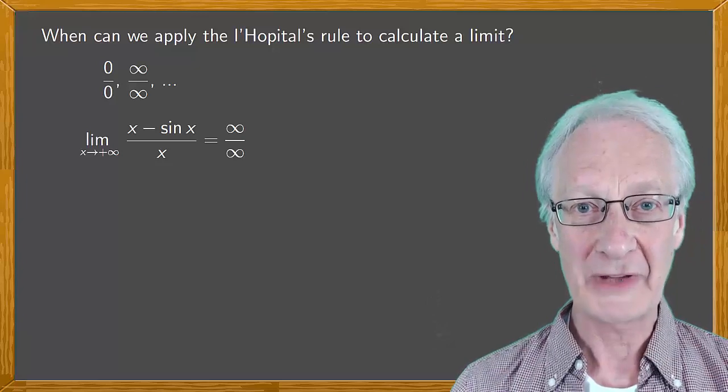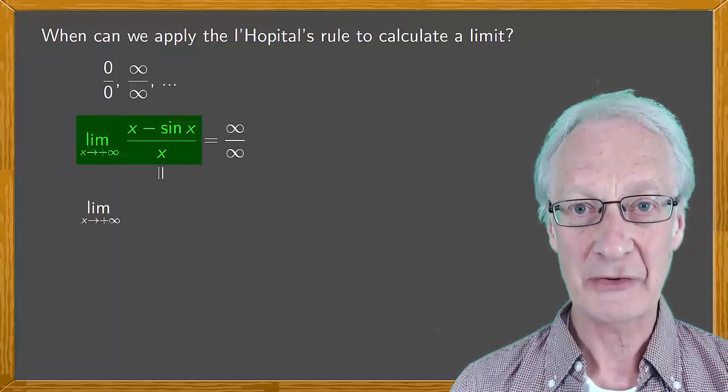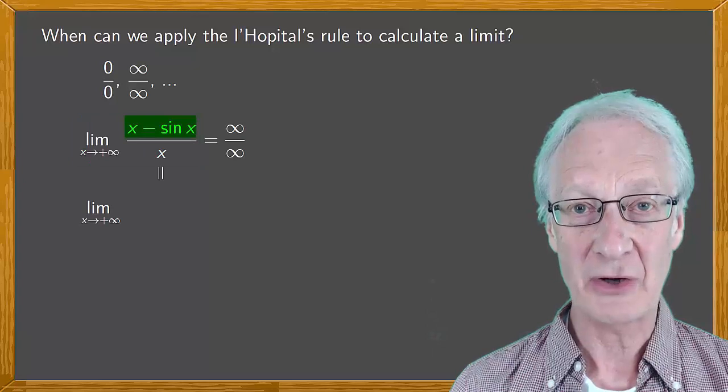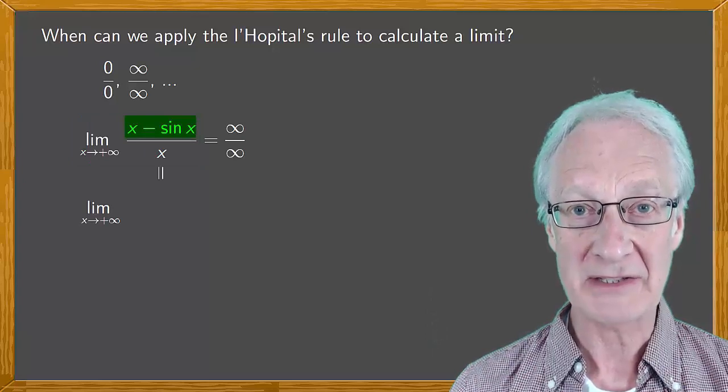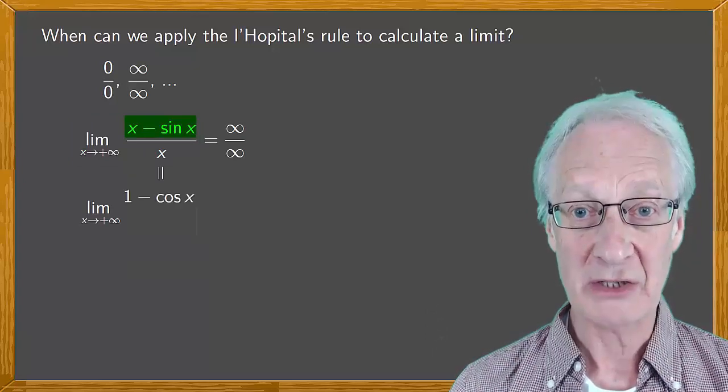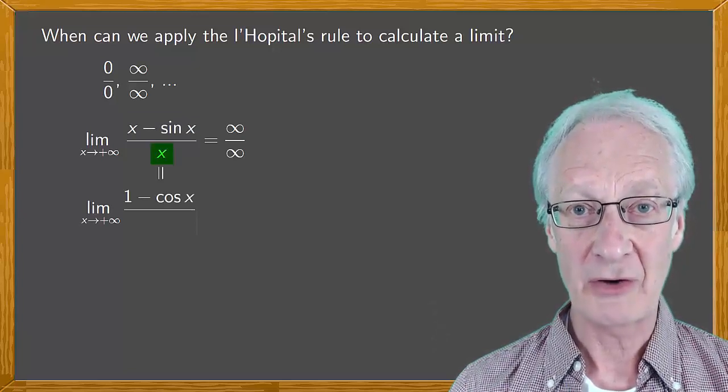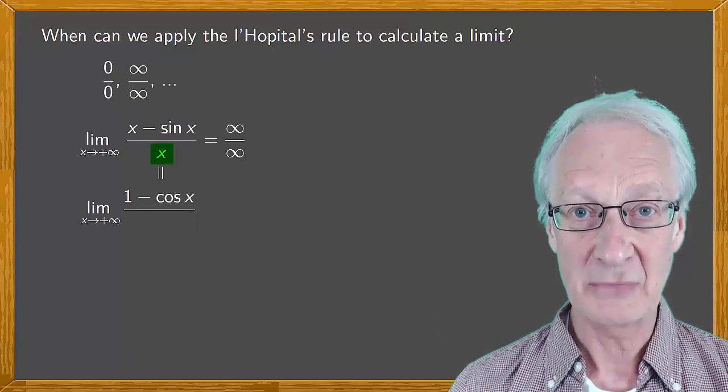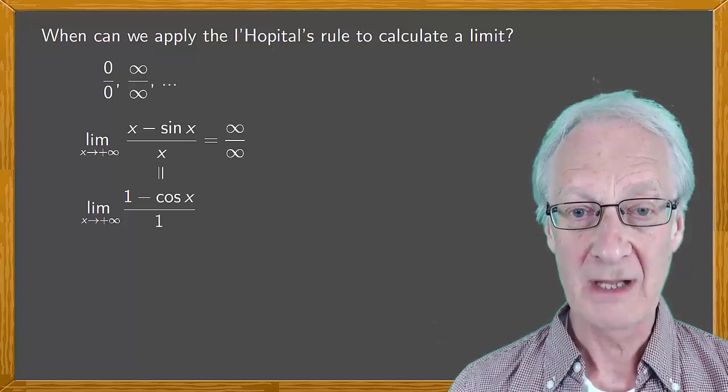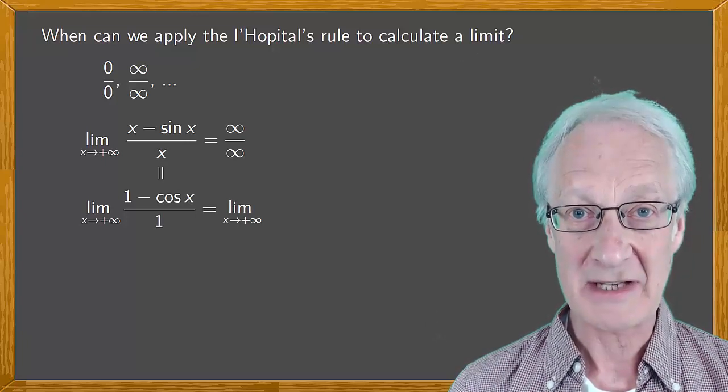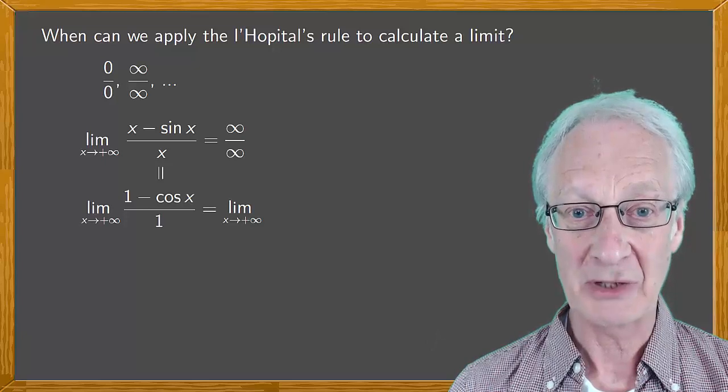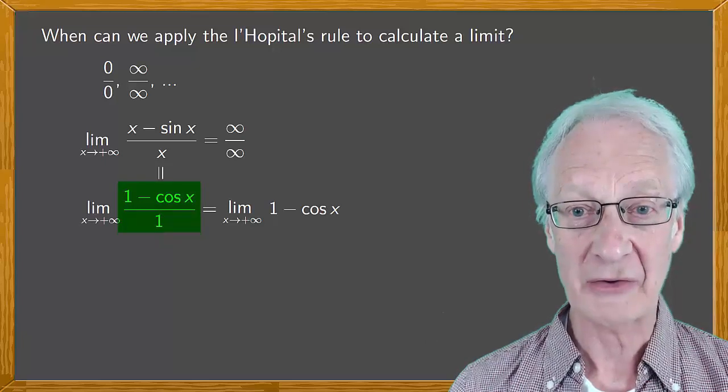The rule says that the limit as x tends to plus infinity is the derivative of the numerator, x - sin x, which is 1 - cos x, divided by the derivative of the denominator, which is simply 1. So the limit as x tends to plus infinity of 1 - cos x.